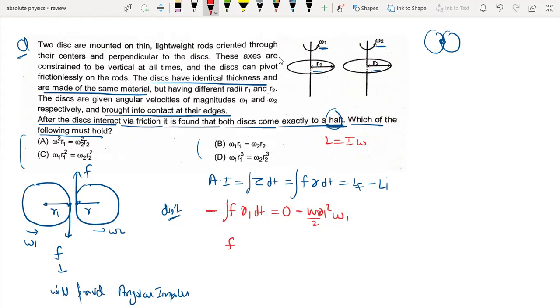The value of the mass is density times volume. Volume equals pi r squared times thickness. So this is rho times pi times r1 cubed times t times omega 1 by 2, which equals F dt.